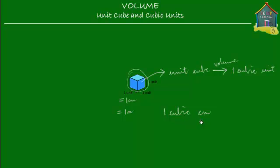One cubic centimeter, which is also written as one centimeter cube or one cc, is the amount of space that a centimeter cube occupies — a cube which has its sides equal to one centimeter.